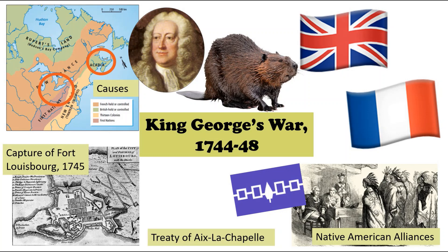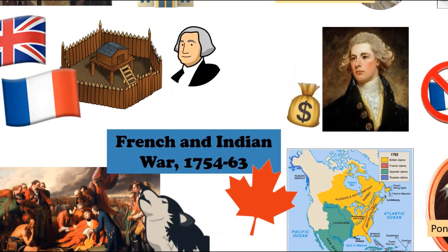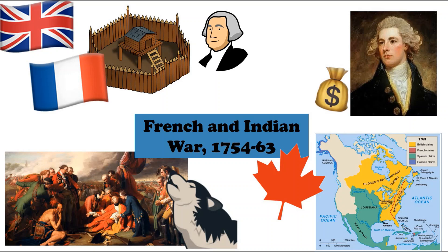The peace treaty signed is the Treaty of Aix-la-Chapelle, which essentially takes everything back to how it was at the very start. The causes are still there, and this will bubble up again in 1754, when for much the same reasons as King George's War another conflict breaks out, known as the French and Indian War.